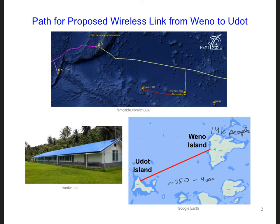We've discussed setting up a wireless link from Wayno to U. Dot, and we've discussed possible antennas that we could install on both islands to establish this link. The question is, how well will this link work? How much power do we need at each antenna, and how sensitive of a receiver do we need at each antenna?